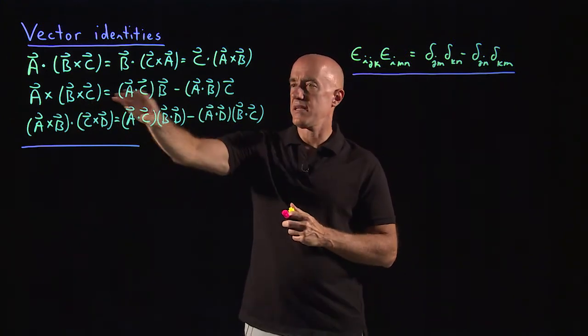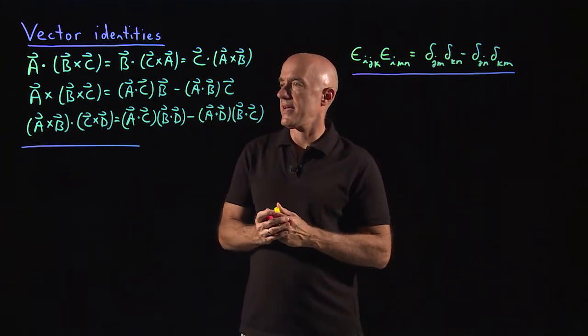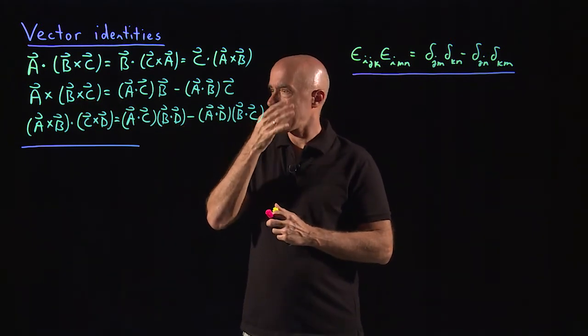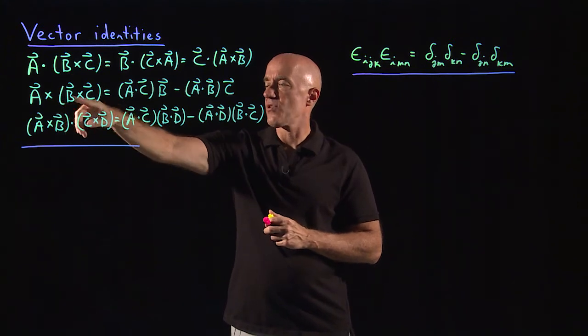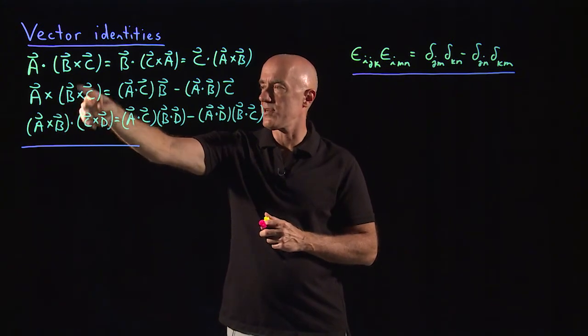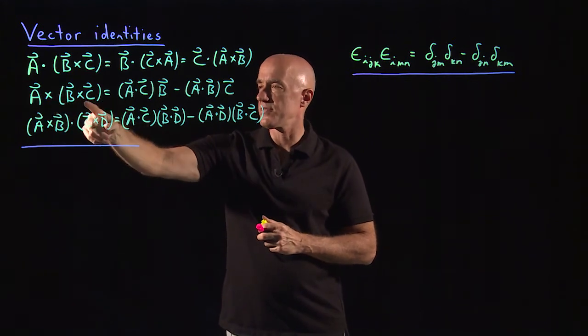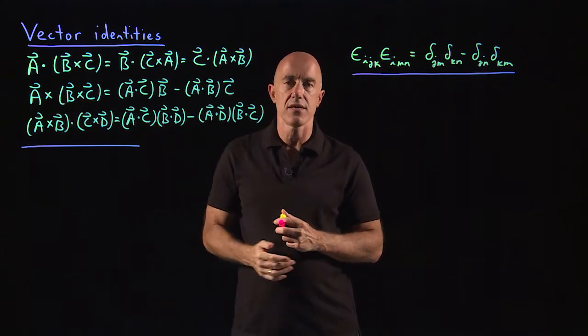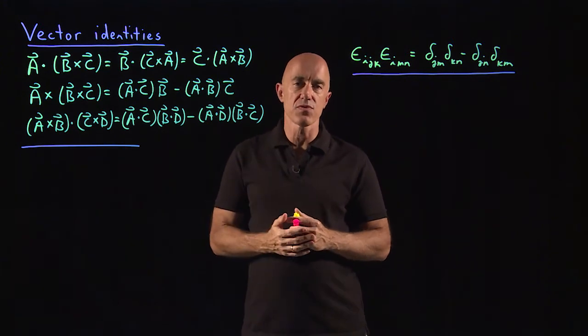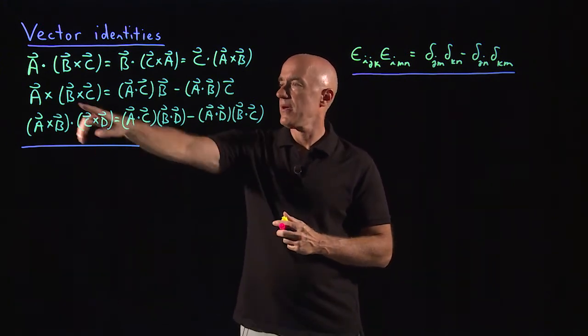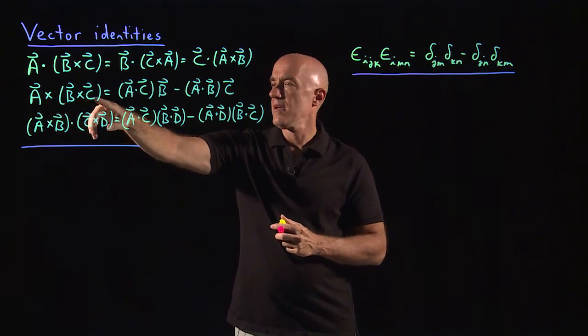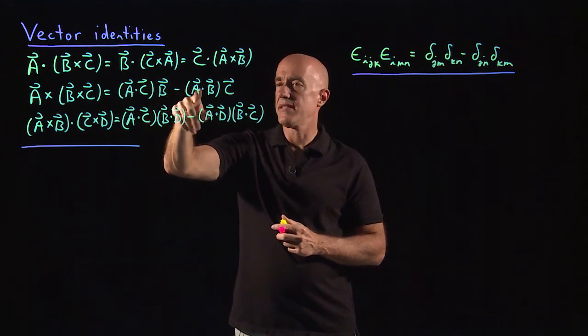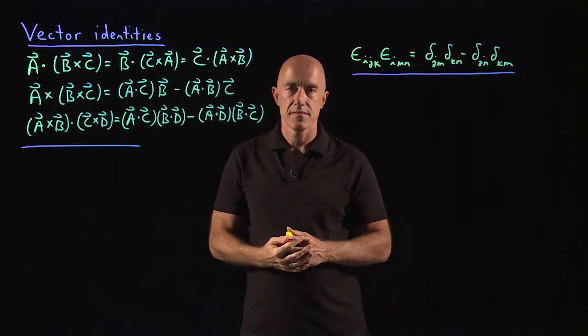The second identity is a vector identity in the sense that the left-hand side is a vector and the right-hand side is a vector. That one says A×(B×C). Here you have to do B×C first and then you do A×(B×C). This parenthesis is important. Vector multiplication is not associative, and that was one of your homework problems. So here A×(B×C) = (A·C)B, which is a vector, minus (A·B)C.